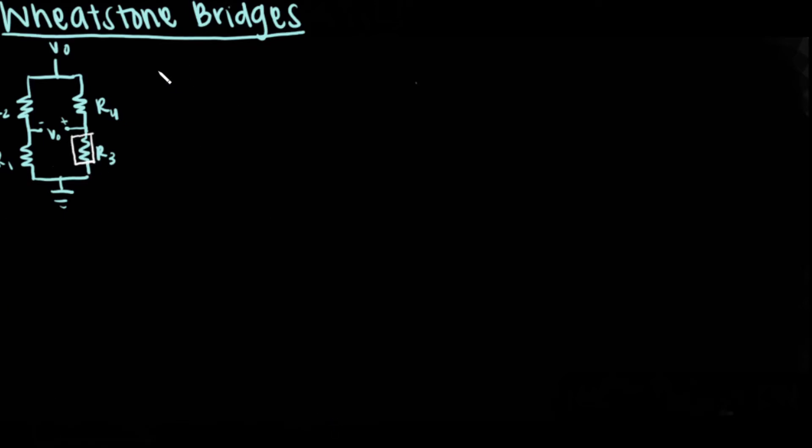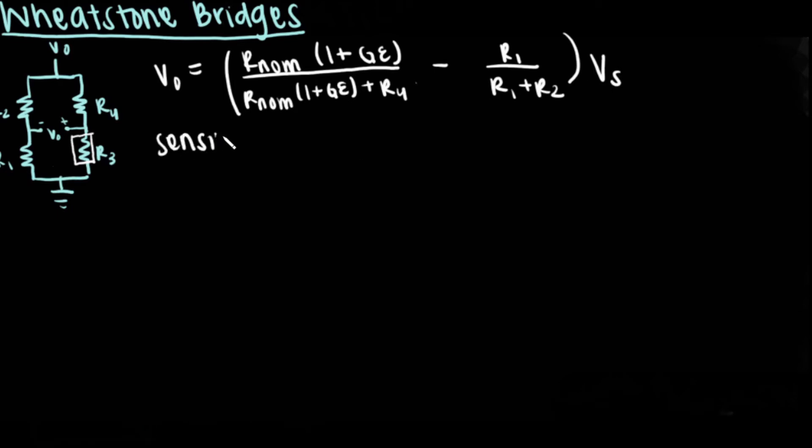The previous equation can be changed to reflect whatever the strain gauge resistance is equal to. In the case of Rg equals Rnom times 1 plus Ge, the equation for the wheatstone bridge becomes V0 equals Rnom times 1 plus Ge divided by Rnom times 1 plus Ge plus R4 minus R1 divided by R1 plus R2, all times the voltage source.